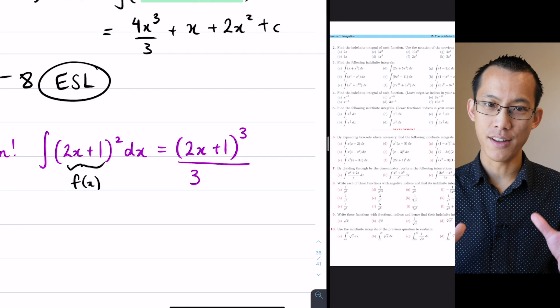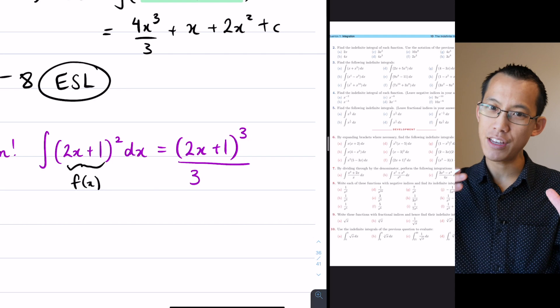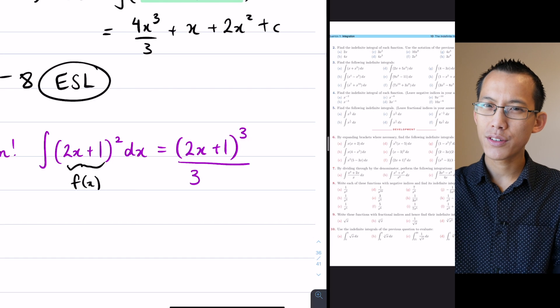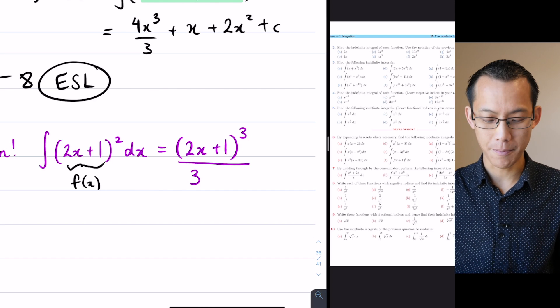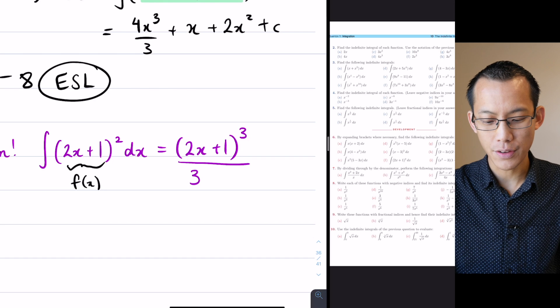I've dealt with the outside of this function – it was a thing raised to a power. Now I have to deal with the inside, which is 2x + 1. I've got to divide by that derivative as well.